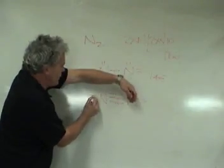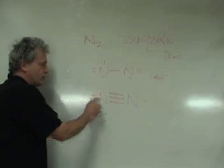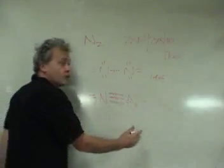Over here, this one also wants to have 8 around it, so it needs 2 more. How many electron dots do I have down here? 2, 4, 6, 8, and 2 is 10.